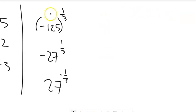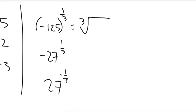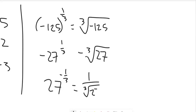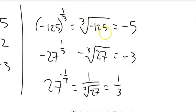Notice this one has a negative base. It's the 1/3 power, so that's a cube root. Since the root index is odd, we can get a real answer. Now this one is written differently — it's the negative of the cube root of 27 — same answer but different. And this one has a negative exponent, which means flip the fraction — it becomes 1 over the cube root of 27, which is 1/3.